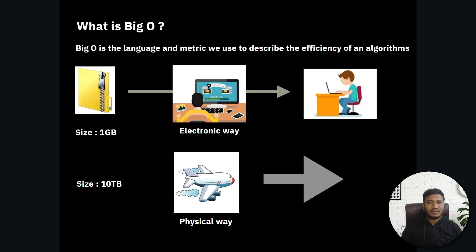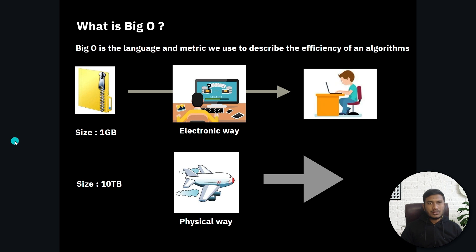Hello everyone, my name is Bappi Hamed and welcome back to this video. In this video I'm going to discuss what exactly Big O is. Big O is nothing but a language and metric we use to describe the efficiency of an algorithm. Basically, an algorithm's performance can vary based on the input size given.